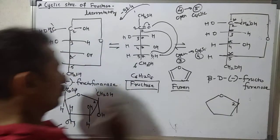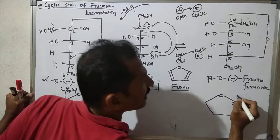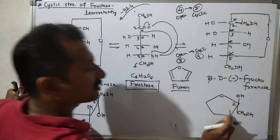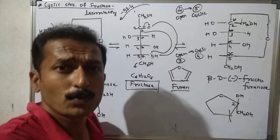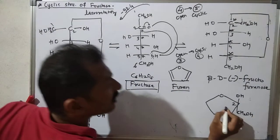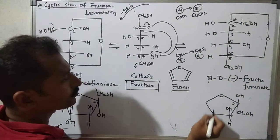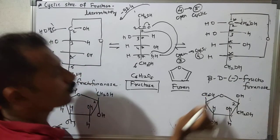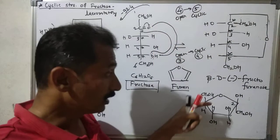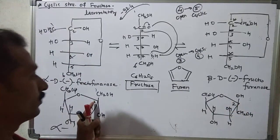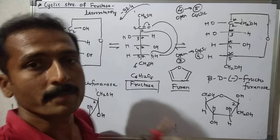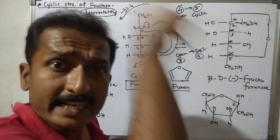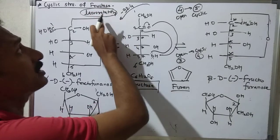For carbon 2 (anomeric carbon): if OH is on the left side, it is at the beta side; if on the right it is alpha side. Carbon 3's OH is on the right (CH2OH-side), carbon 4 has OH on the beta side, carbon 5 has H, and carbon 6 is CH2OH (primary alcoholic group). In alpha vs beta, only the anomeric carbon 2 changes — OH left in one, OH left in the other. Fructose is levorotatory, glucose is dextrorotatory.